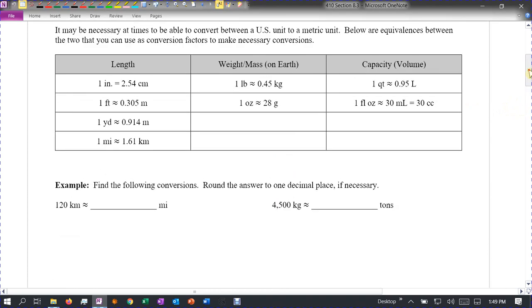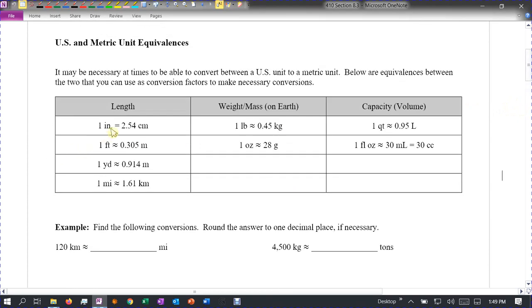The standard conversions that we're going to use here are one inch is equal to 2.54 centimeters, one foot is approximately 0.305 meters, one yard is approximately 0.914 meters, and so on. These are now new conversion factors, which remember means you can switch these into one inch over 2.54 centimeters, or you could do the other way around 2.54 centimeters over one inch. For each one of these, there's two different things you could write down.